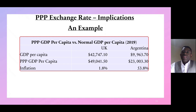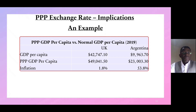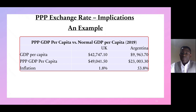You can see that Argentina's PPP GDP per capita is more than double the normal GDP per capita, and that is on the back of a very high rate of inflation of 53.8%. So we can see how the PPP exchange rate does impact on a country's GDP as well as GDP per capita.